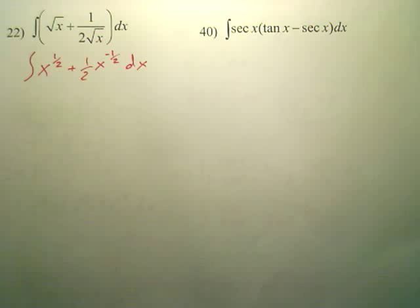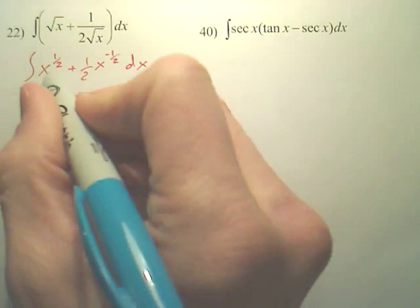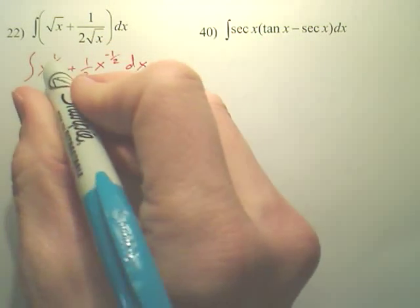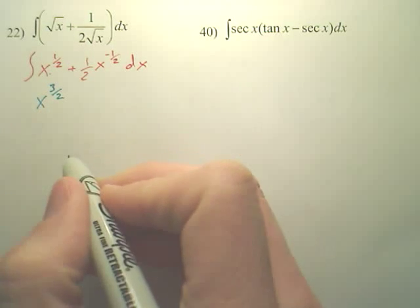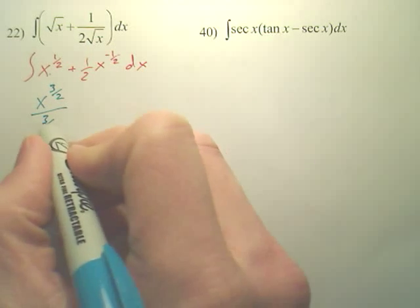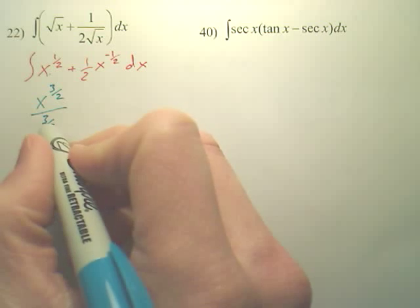That would be your first step. Now, you can integrate each one of these. You add a power to one-half, that would be x to the three over two, and then you divide by three over two, which can get a little ugly for people.